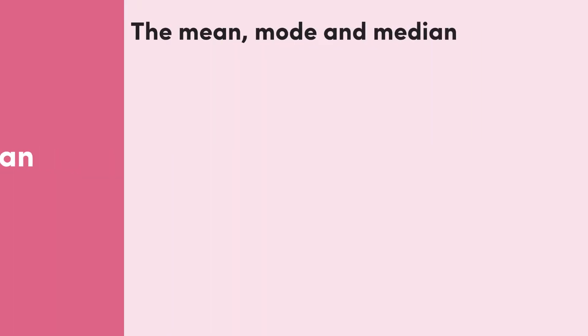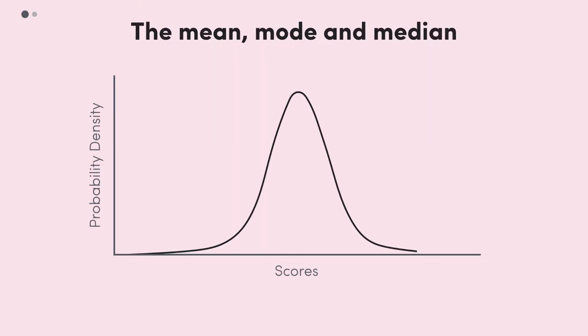By now we should all be familiar with the symmetrical bell-shaped curve of the normal distribution of a continuous random variable. Previously, we learned that the mean is smack bang in the middle of the distribution, right under the peak of the curve. So where do the mode and median lie?